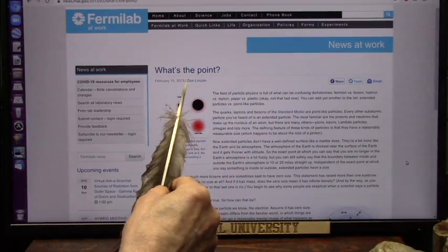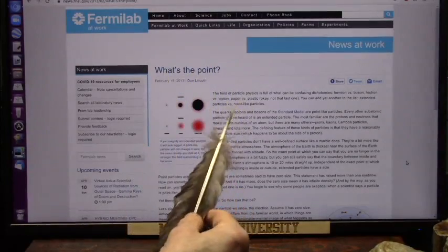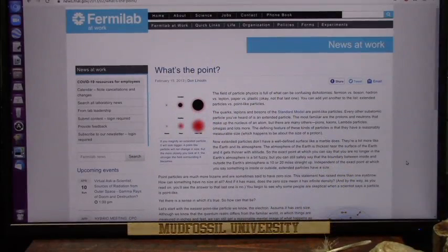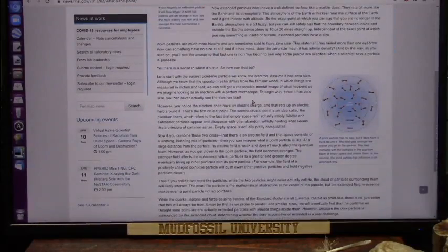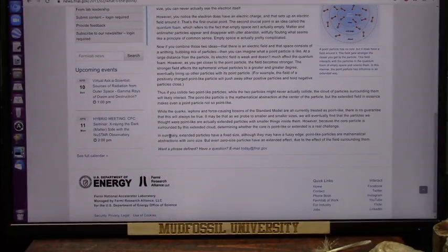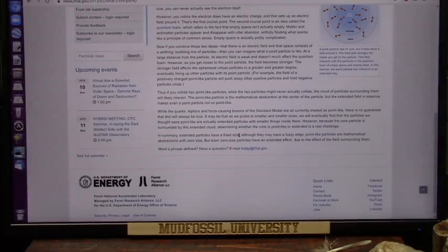And this is Don Lincoln. This is his article from 2013, goes a long ways ago. And there's the black particle, exactly what I showed. He talks about the point particle having very little mass and maybe none. And he says in summary, extended particles have a fixed size. That's the black one, the extended one. It's fixed.